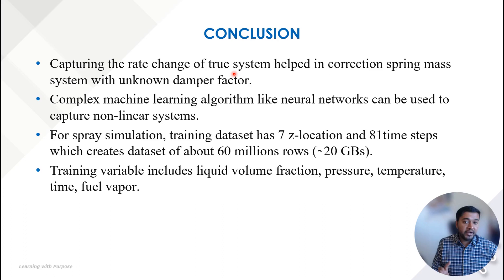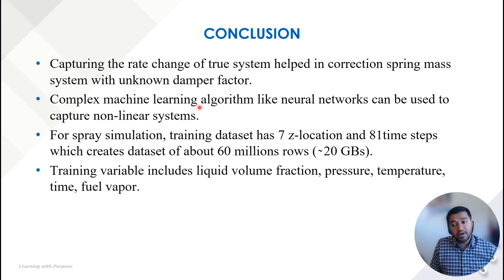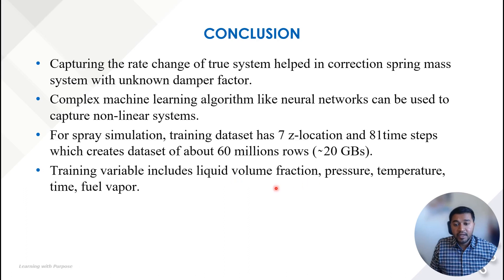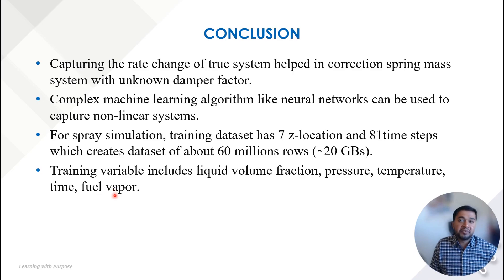We see that the green symbol represents the prediction of the governing equation for the position of the block, and it matches very well with the actual system. In conclusion, the damping term was very well captured using the machine learning correction. For our actual system, we are using a neural network based model trained on 60 million rows, with liquid volume fraction, pressure, temperature, and fuel vapor as training parameters. Thank you.